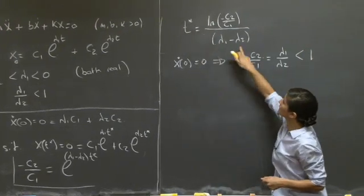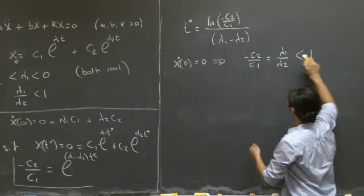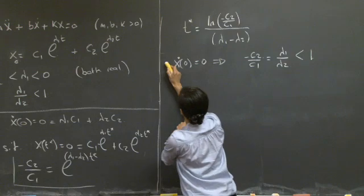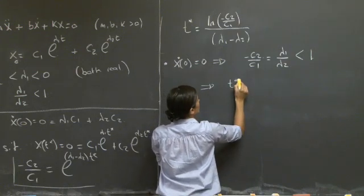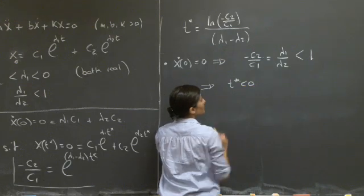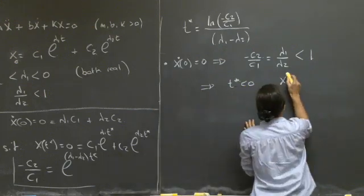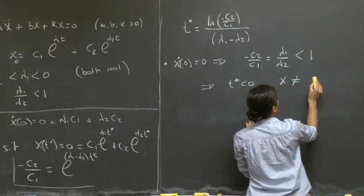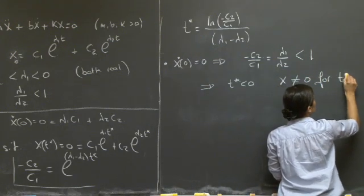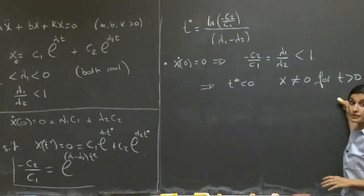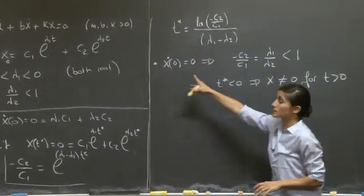Since minus C2 over C1 is less than 1 (but still positive), its log is negative. In the denominator, lambda-1 minus lambda-2 is positive. So with this initial condition, t-star is negative, meaning x is never equal to 0 again for t greater than 0.